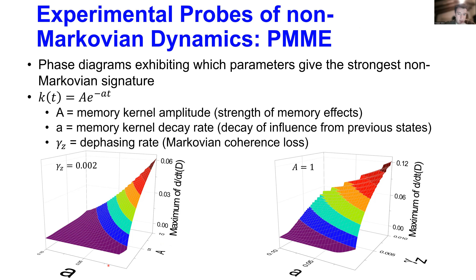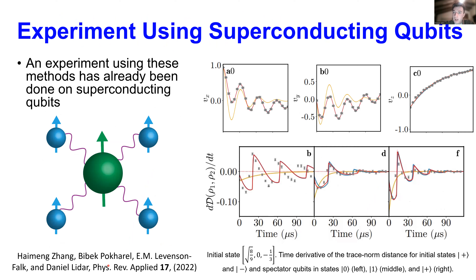A related experiment using the same methods was done by colleagues at USC — Haimeng Zhang and Professor Daniel Lidar — on superconducting qubits. They measured the Bloch vector as a function of time and the derivative of the trace norm distance for different bath spin initial states. By controlling the bath spins and putting them into different initial states, they found a positive derivative of D, implying information backflow. Interestingly, different initial bath states produced different dynamics of this information backflow.